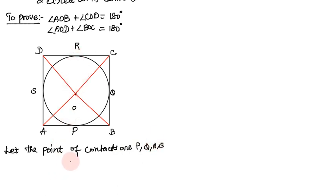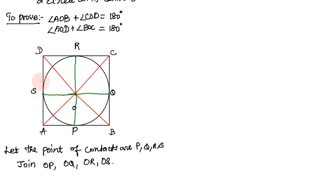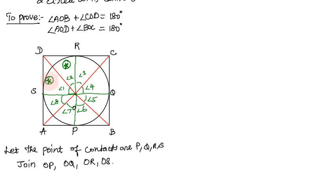If you want to join, you will need to join and name the angles. Angle 1, angle 2, angle 3, angle 4, angle 5, angle 6, angle 7, angle 8. Now, if you want to join, you will need to join. This triangle is congruent - triangle 1 and 2 are equal. This triangle is congruent.